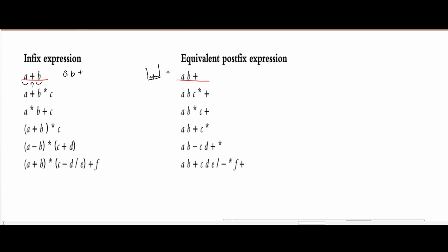For the next problem, we have A plus B times C. So we're going to have A as our operand. We have this plus, so we're going to store it in our stack. Then we have our B. And then we have this multiplication — multiplication has a higher precedence than the plus, so we're just going to write it in the stack. Next we have our operand C, and since we have nothing else left, we're just going to pop everything off of our stack. So we have the multiplication and then the plus, and that's how we get the postfix result.